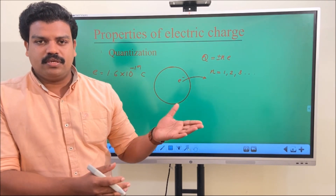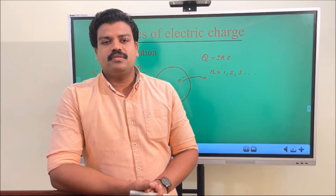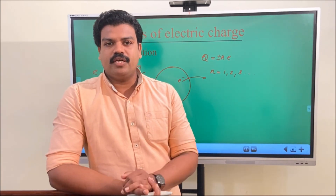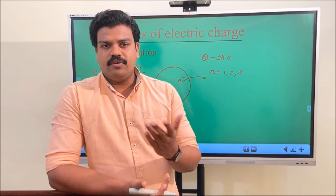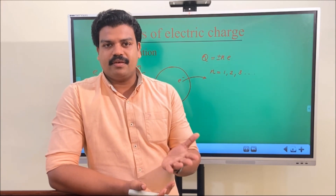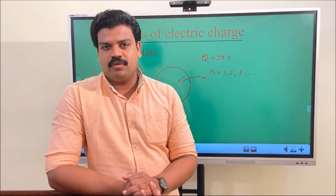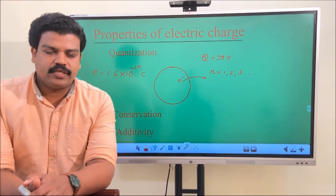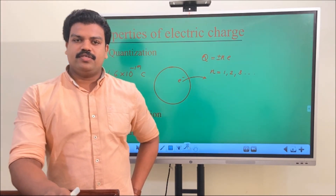For example, if a question says a body has a charge of (15/2) × e, that means 7.5 × e. Since 7.5 is not an integer, a charge of 7.5e is not possible. This illustrates the property of quantization.